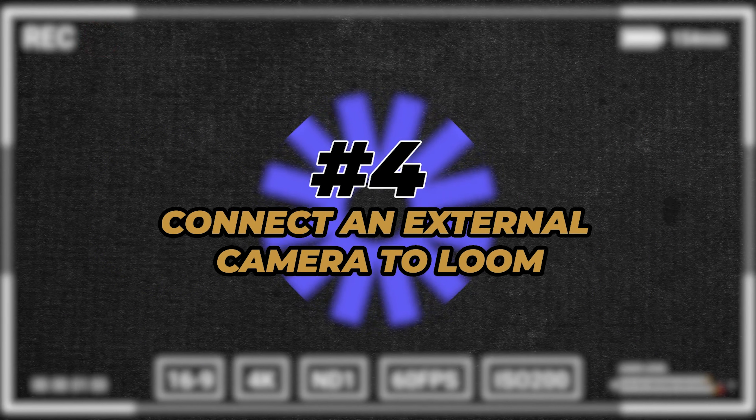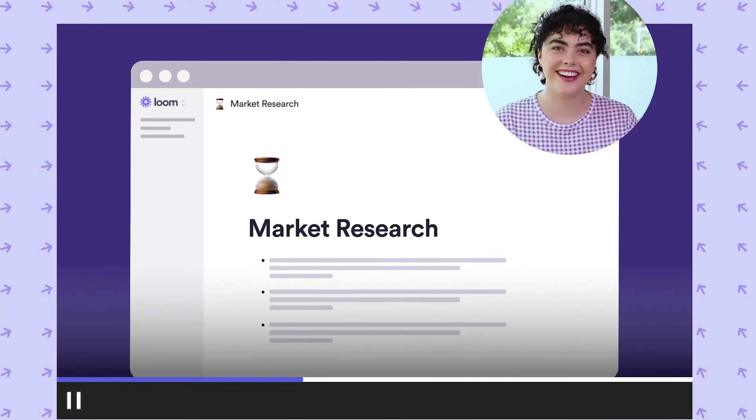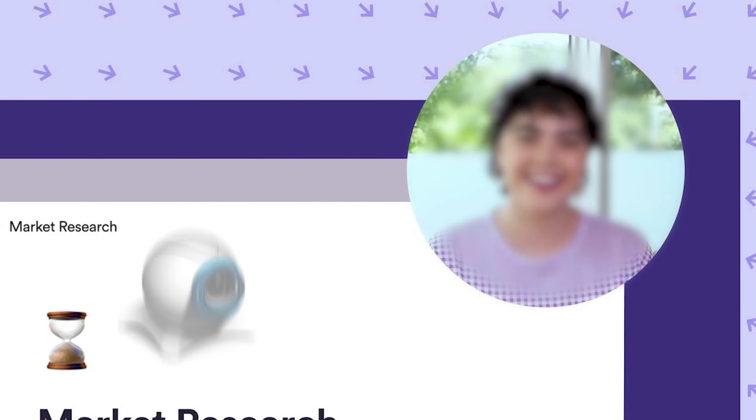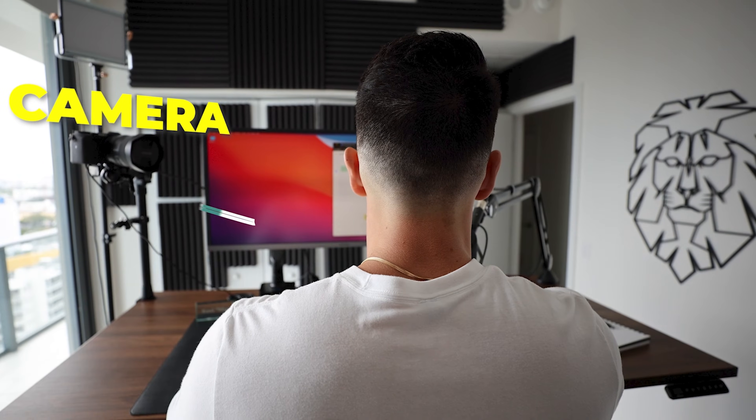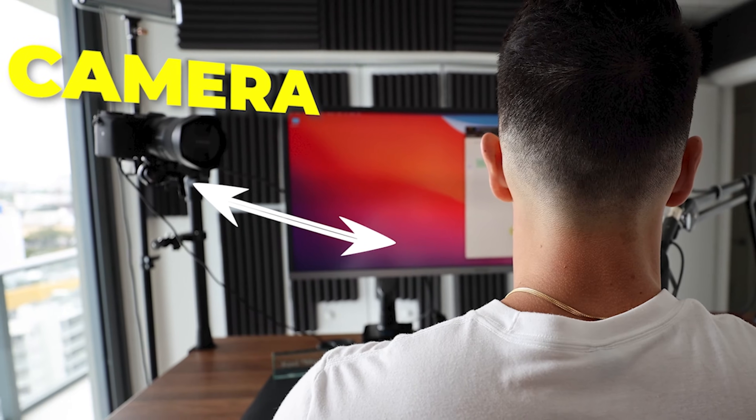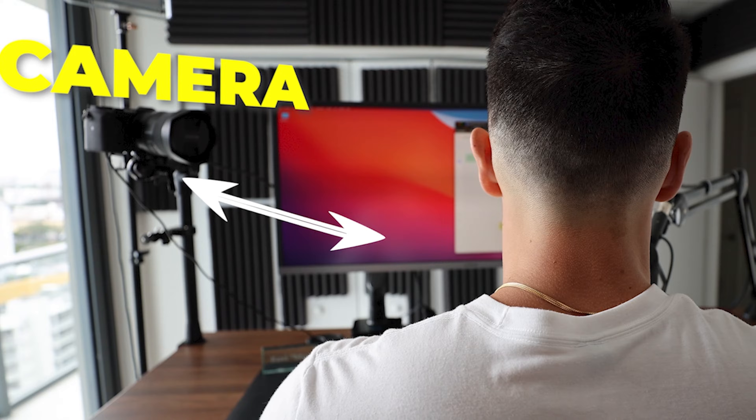Number four is connecting your external camera to Loom. This tip is particularly for business owners and content creators who want to up the look or brand presence of their Loom videos. By default, a lot of people use their profile photo or a grainy webcam, but with a simple Cam Link connection between your camera and your computer, you can use your 4K external camera — like the one I have right now — inside your Loom videos.